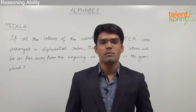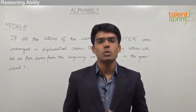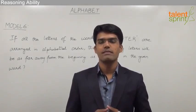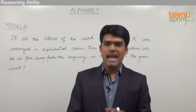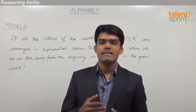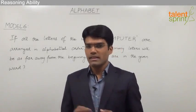Let us now take the sixth model from the topic alphabet where we are supposed to arrange all the letters of the given word in alphabetical order and find out how many of them are as far from the beginning as they are in the original word. Let's look at the question.